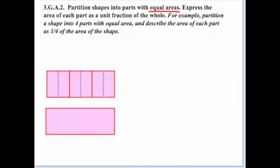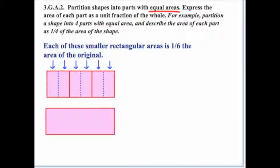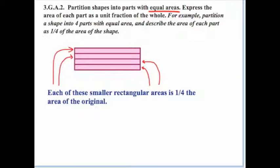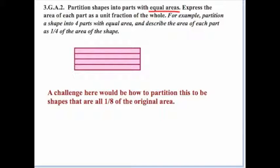Just like before, we can measure and cut each of those smaller thirds in half, so now each of those smaller rectangular areas is one-sixth the area of the original. There are other ways to do this — we don't have to use only vertical lines. We can also use horizontal lines. For one-eighth, students should quickly find the midpoint, draw a vertical line, and those four equal parts become eight equal parts.